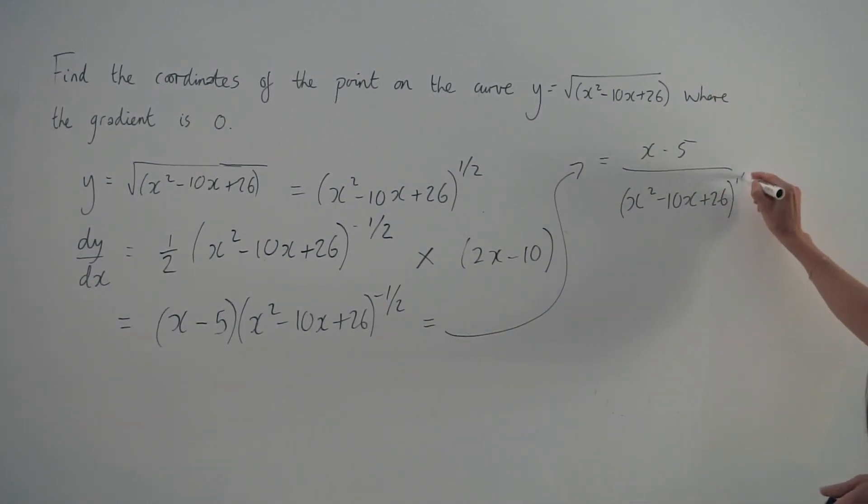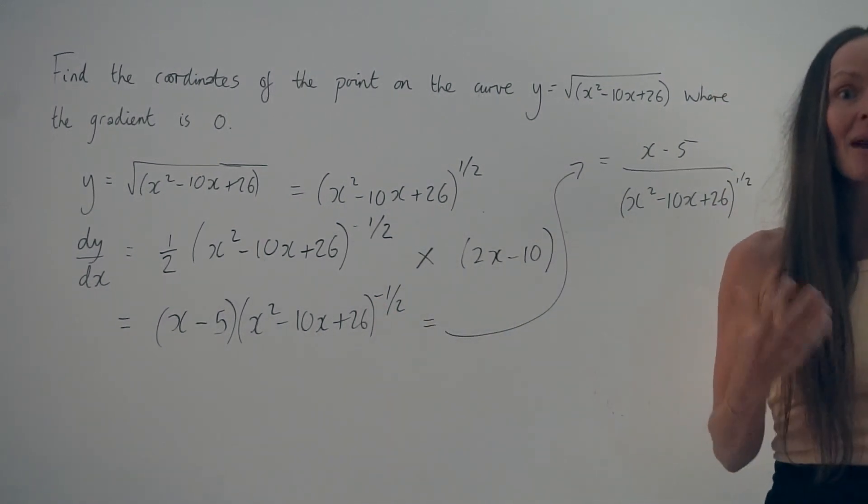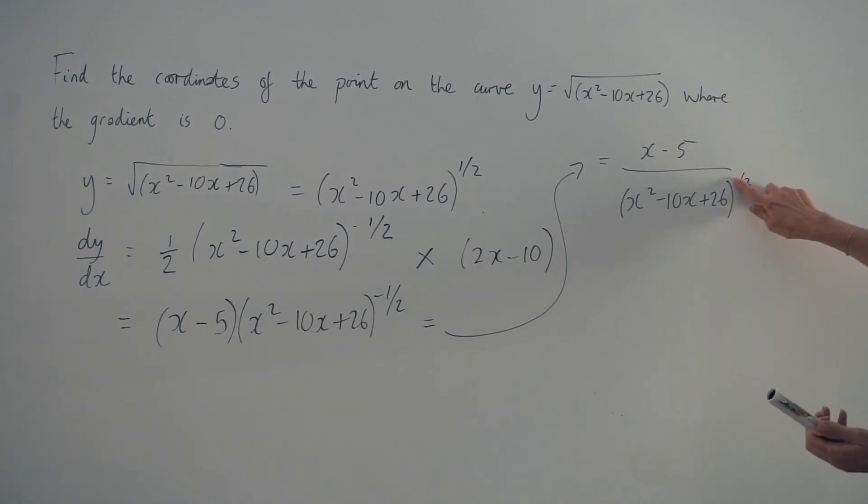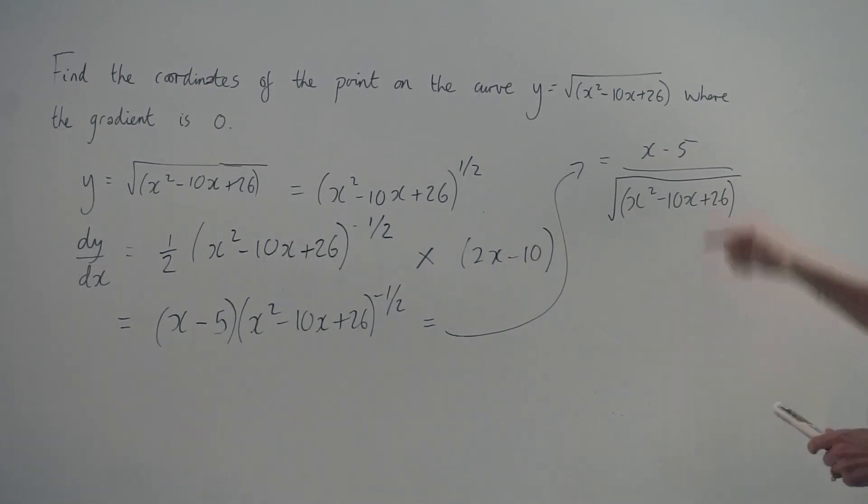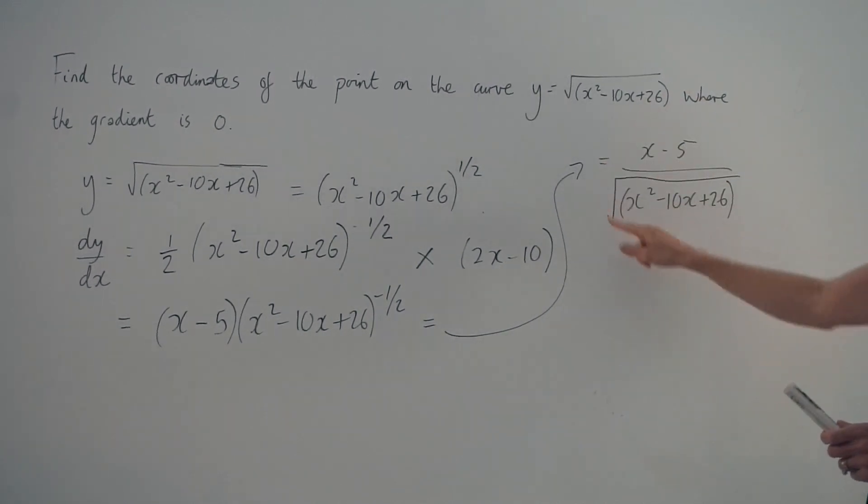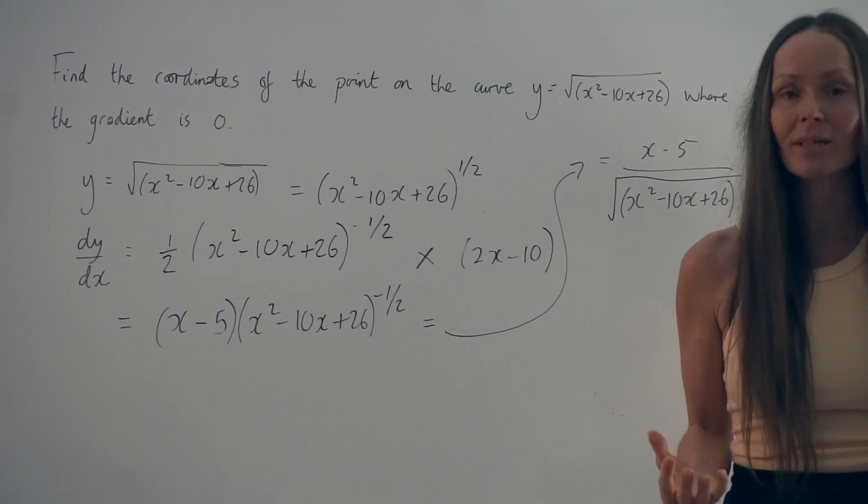So anything to the power of a half is the same as square rooting. So instead of writing the power of a half, you can write it like so. So this is the derivative of the equation. This is the gradient of the curve at any point.